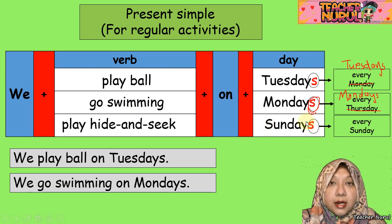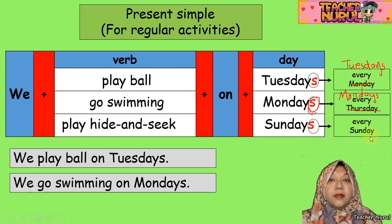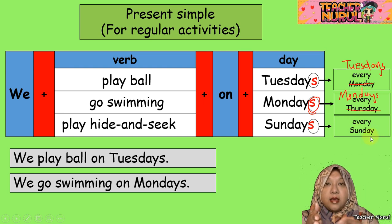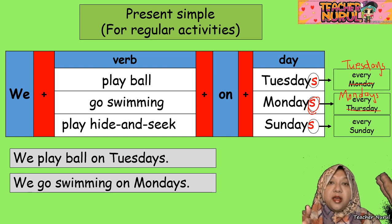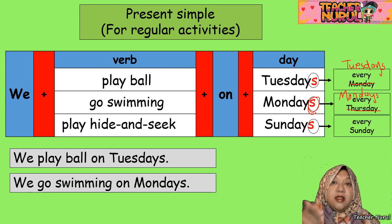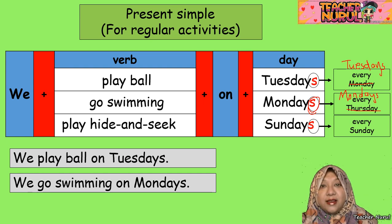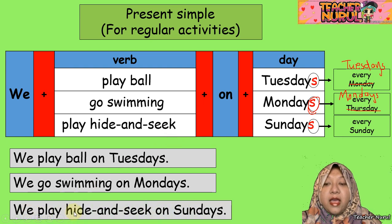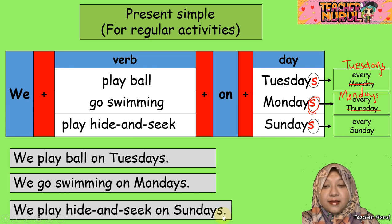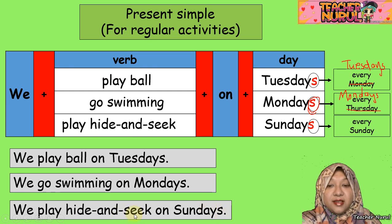The 'S' shows every Sunday — this Sunday, next Sunday, another two weeks, another three weeks, every month. It is repetitive; we repeat it again and again every week. So when we make it in a sentence: we play hide and seek on Sundays. This is how we write in a full sentence.